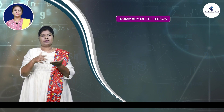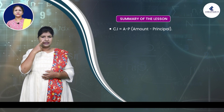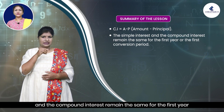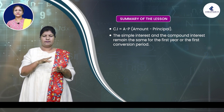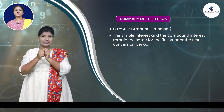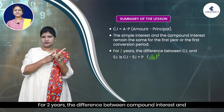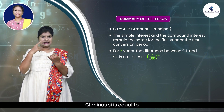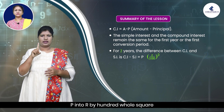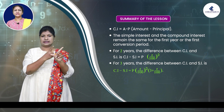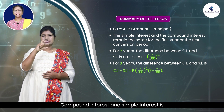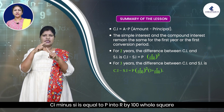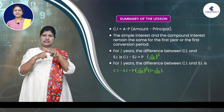Summary of the lesson. Compound interest = Amount − Principal. Simple interest and compound interest remain the same for the first year or the first conversion period. For 2 years, CI − SI = P × (R/100)^2. For 3 years, CI − SI = P × (R/100)^2 × (3 + R/100).